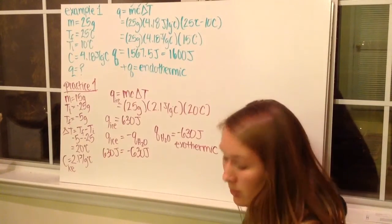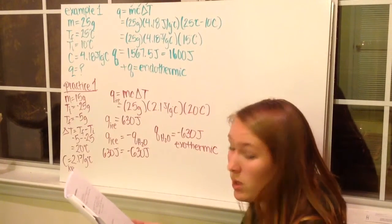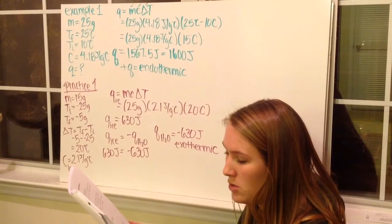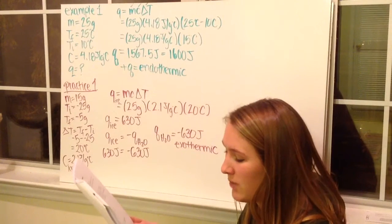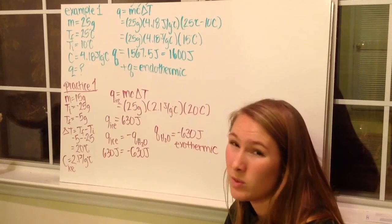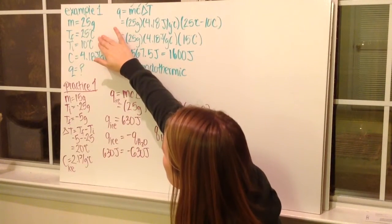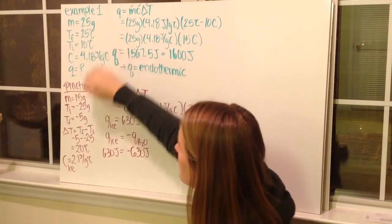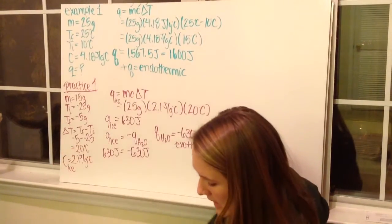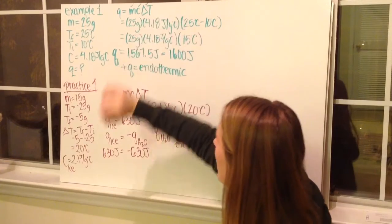For an example on your worksheet: if 25 grams of liquid water is heated from 10 degrees Celsius to 25 degrees Celsius, what is the heat change of the water in joules? They give you that the specific heat of water is 4.18 joules per gram degrees Celsius — this is a constant you should know. Listing out variables: mass is 25 grams, final temperature is 25 degrees Celsius, initial temperature is 10 degrees Celsius, and specific heat is 4.18 joules per gram degrees Celsius. We're solving for Q using Q equals MC delta T.